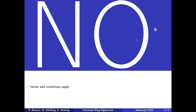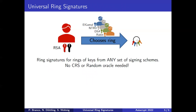Some terms and conditions do apply, and you should come to my talk to learn more about this. But the basic result is that we give a construction for universal ring signatures, which solves precisely that problem where you have to make a key ring from any keys from any schemes. In our constructions, we do not use the CRS, because in this whole whistleblowing scenario you cannot assume trust, and we also don't use the random oracle.